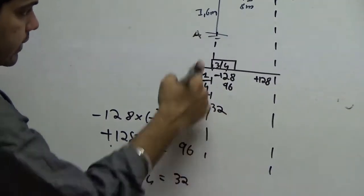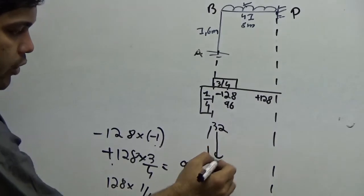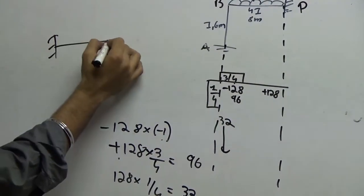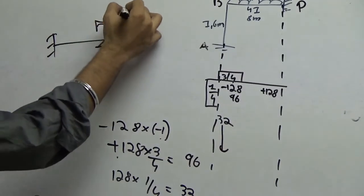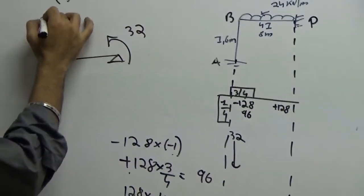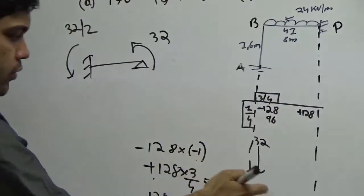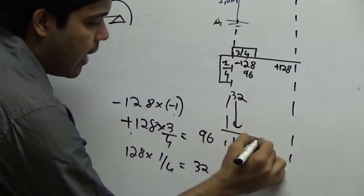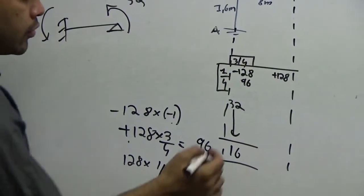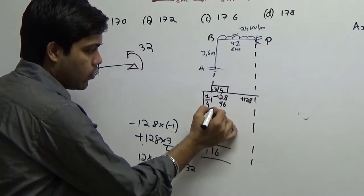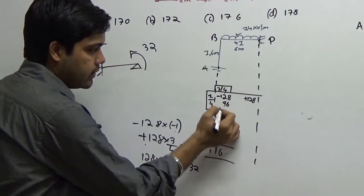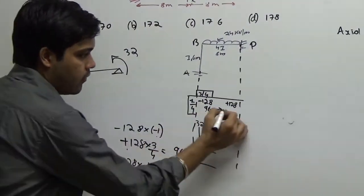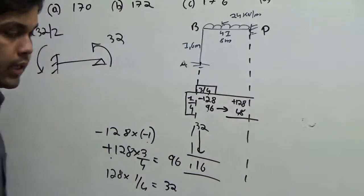So here I will write 96 and for this column I will write 32. Since this end is fixed, this will carry over half its value. Remember the concept - far end fixed, near end hinge. A moment is applied of 32, how much will be transferred? 32 by 2. So that's 16. Actually I am not interested in this right now. So this is 96. This will be transferred here - 96 by 2, that is 48.